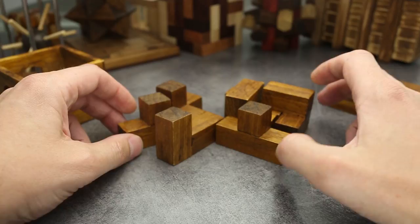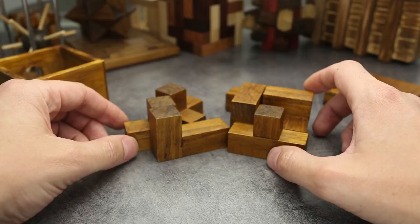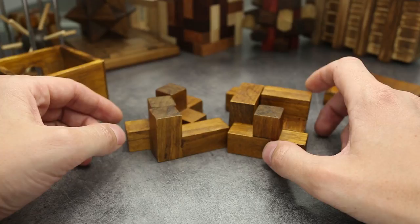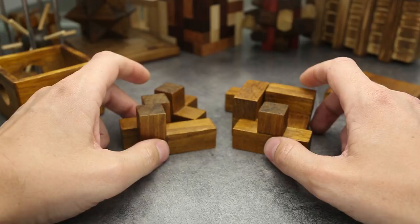There are 240 different solutions how you can assemble the cube out of these seven pieces and also you can make a lot of other 3D shapes. The SOMA cube was invented by Danish mathematician Piet Hein in 1936.